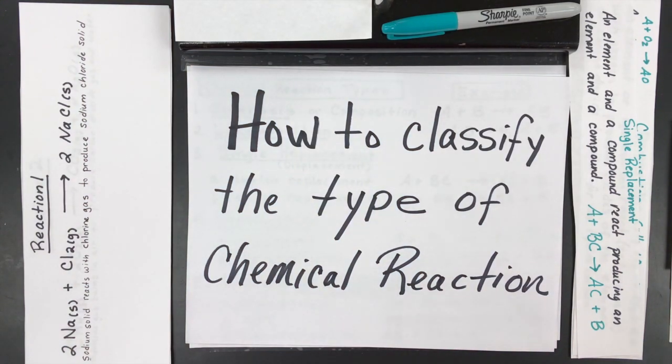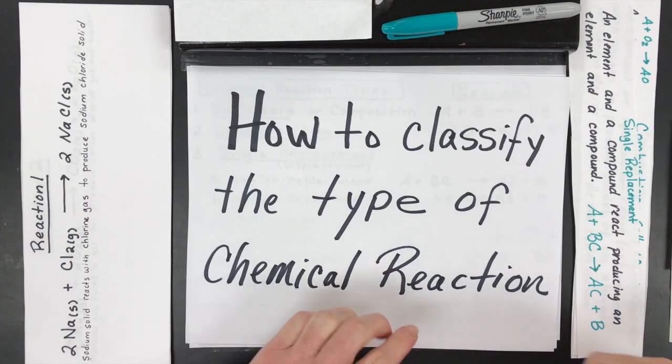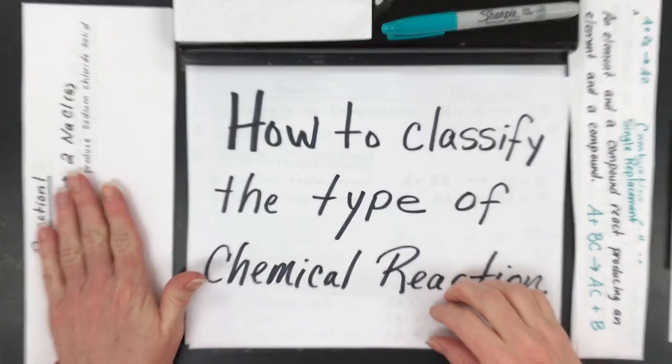Hello fellow chemists and welcome back. Today I want to help you classify the type of a chemical reaction. The goal is for you to explain the different types and then to go through nine examples.